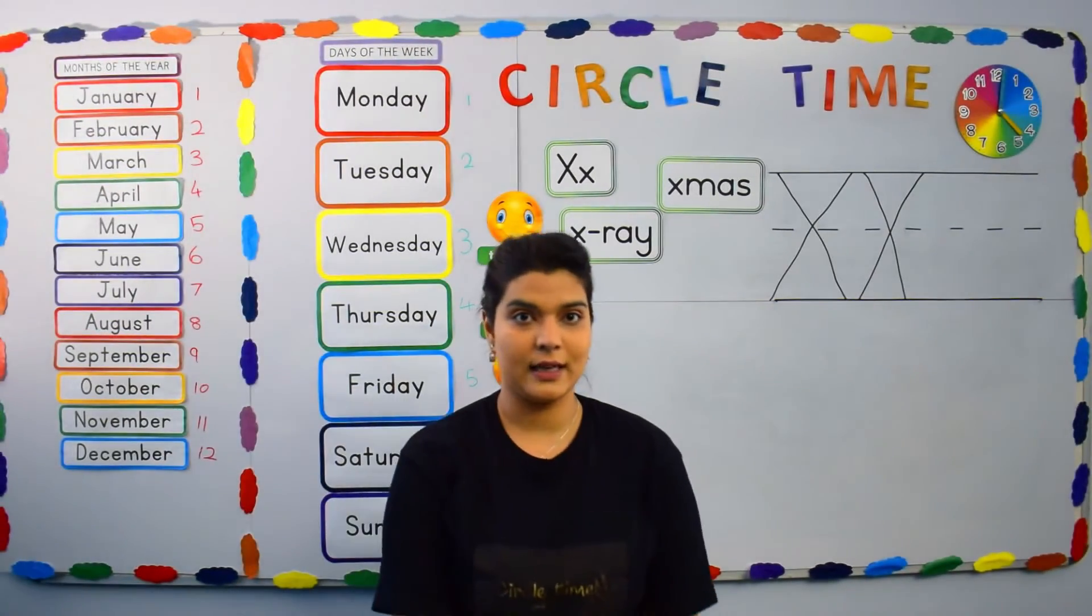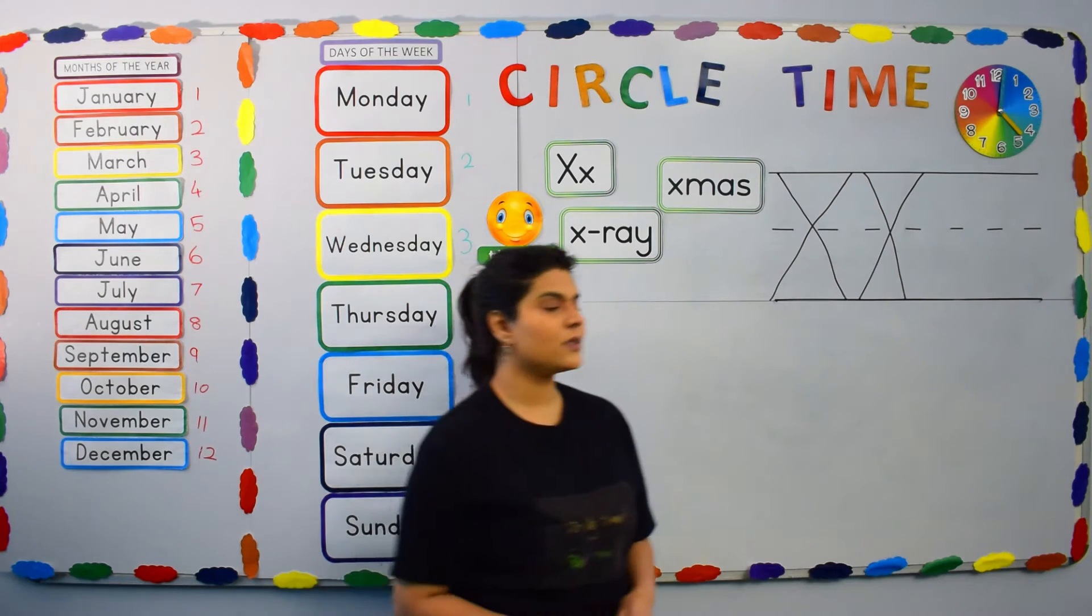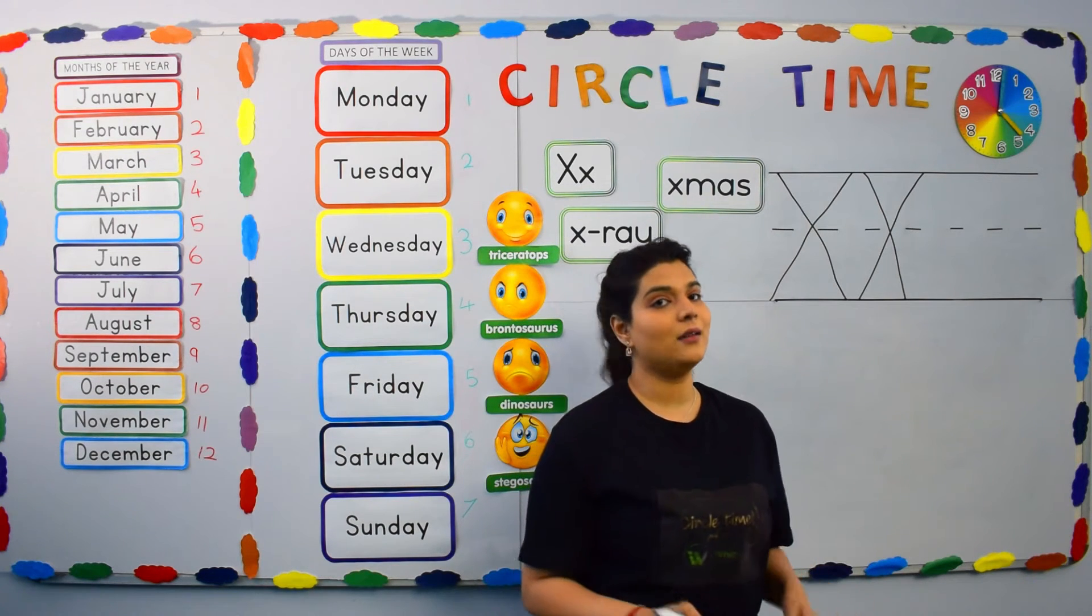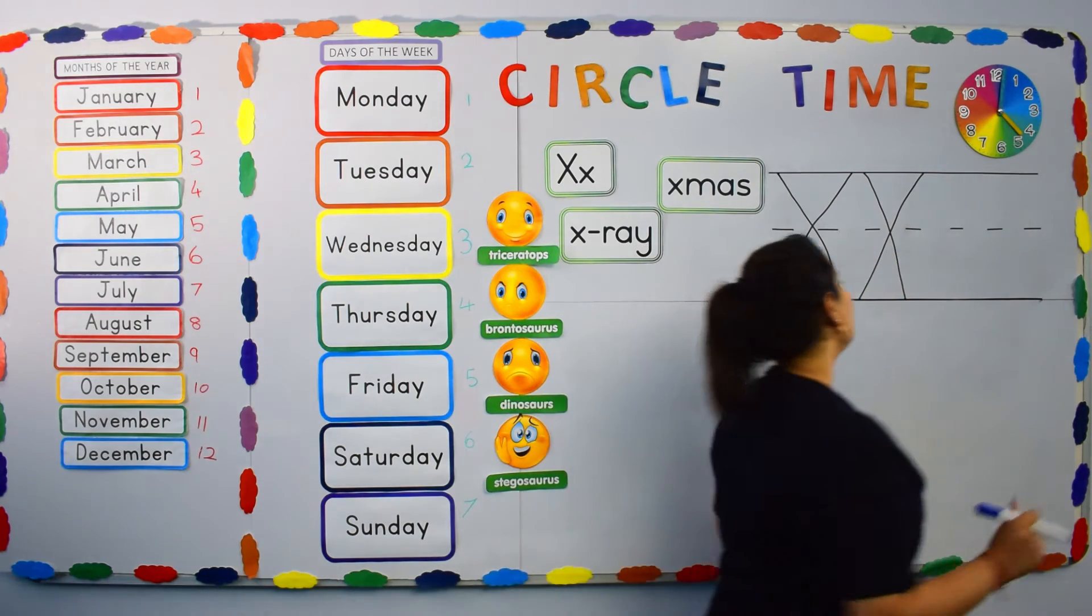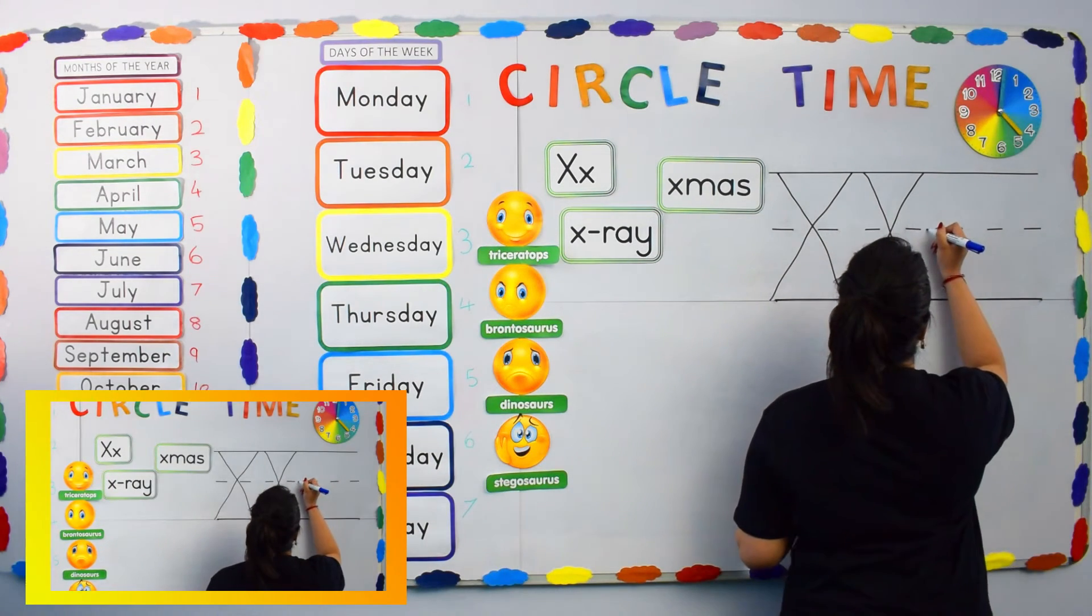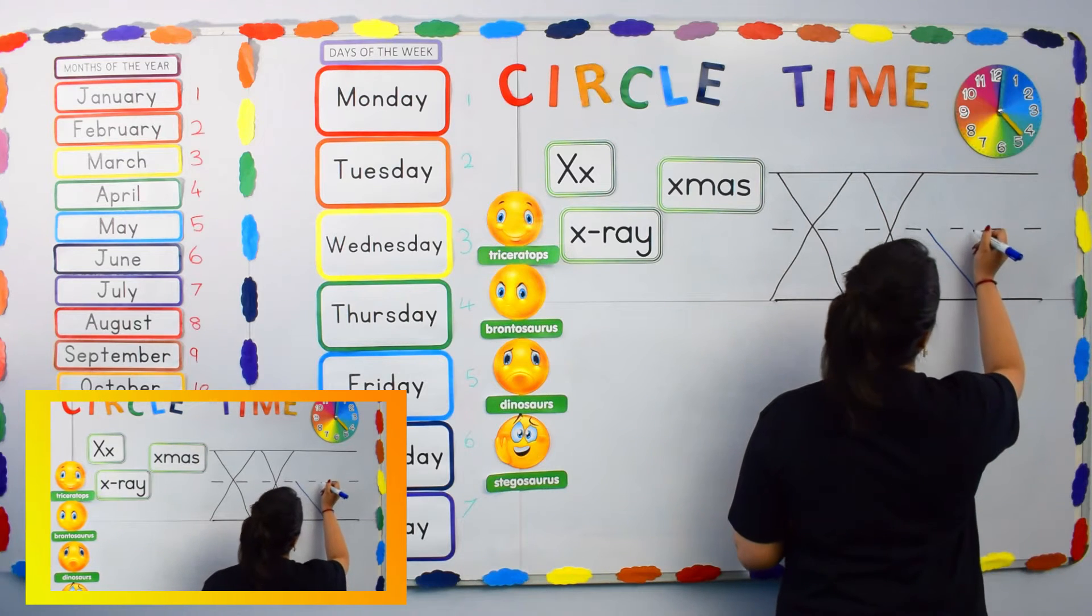How about small letter X? Small letter X. Small letter X looks exactly like big letter X but this time we start at the middle of the line. So, let's do that. One, two.